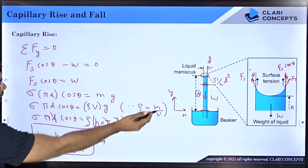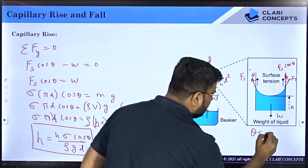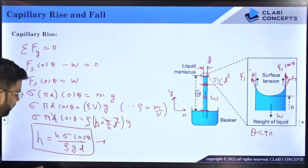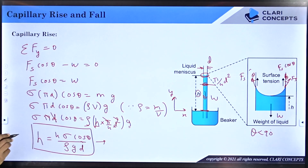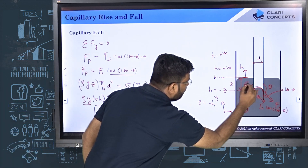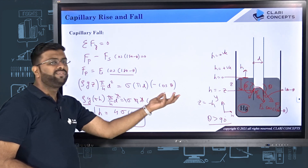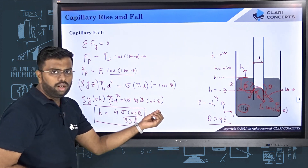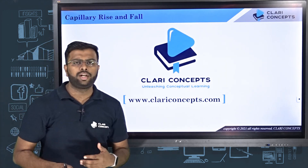The formula for capillary rise and fall is the same: h = 4σ·cos θ / (ρ·g·d). For capillary rise, θ < 90°, so cos θ is positive and h is positive. For capillary fall, θ > 90° (as with mercury in glass), so cos θ is negative and h is negative — meaning it is a fall. For example, if h = −4 mm, that means 4 mm of capillary fall. Remember this formula — we will solve numericals in the upcoming class. Thank you so much.